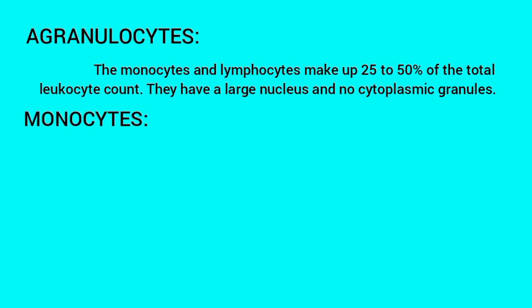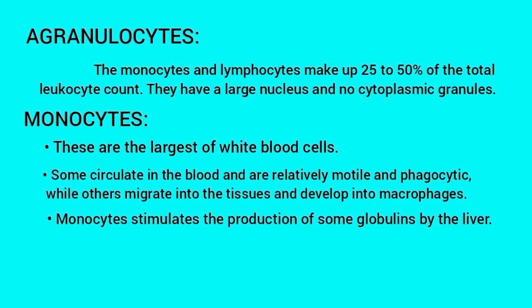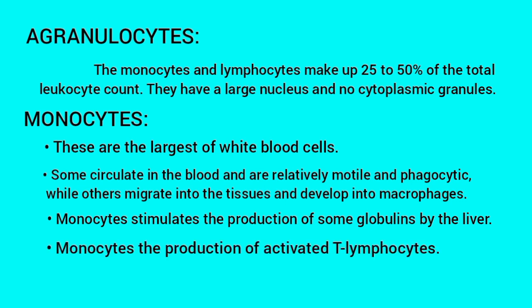Now let us see about monocytes. These are the largest of white blood cells. Some circulate in the blood and are relatively motile and phagocytic, while others migrate into the tissues and develop into macrophages. Monocytes stimulate the production of some globulins by the liver and the production of activated T-lymphocytes.